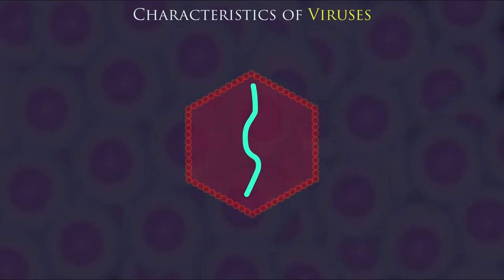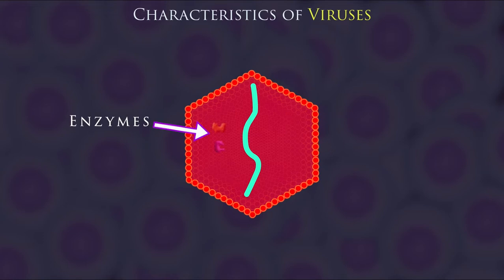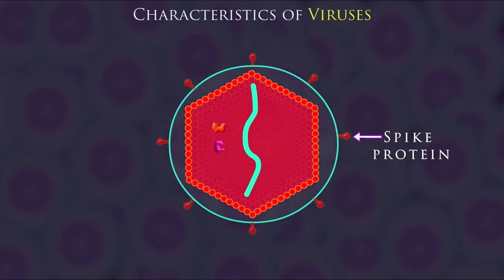They also always have a protein coat called a capsid that encloses their genetic material, as well as other proteins that help them infect cells, such as viral enzymes or spike proteins that help them gain entry. Some also have a membrane on the outside called an envelope.